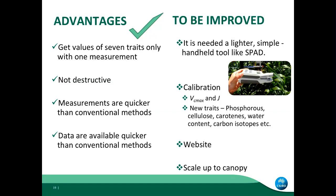In general, there are some advantages from this technique: with just one measurement, we can have a lot of traits — which I really like. It's non-destructive, it's quicker than the conventional methods, and results are available quickly. If you want to select genotypes during the same field season, you can do it. You don't need to wait for the lab to measure nitrogen and go through all the process.